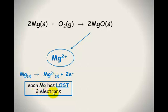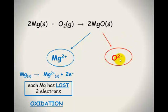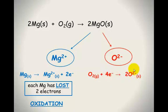Each magnesium has lost two electrons, so this is an oxidation reaction. Now for oxygen: O2 gas becomes 2O²⁻. We have to make sure each side of the reaction has the same charge. The total on the products side is two times 2-negative, which is 4-negative. So on the reactants side, we have zero charge, and we need to add four electrons to make the charges equal — giving us 4-negative on both sides.